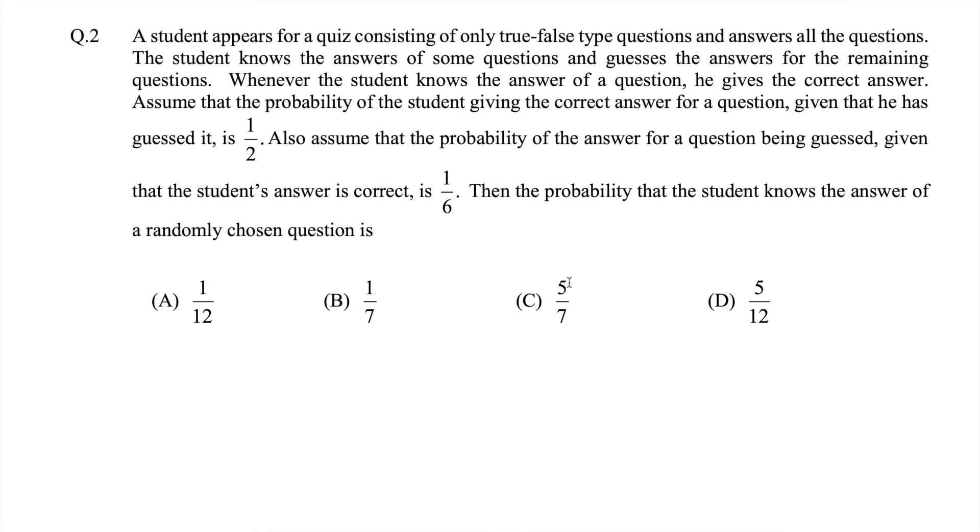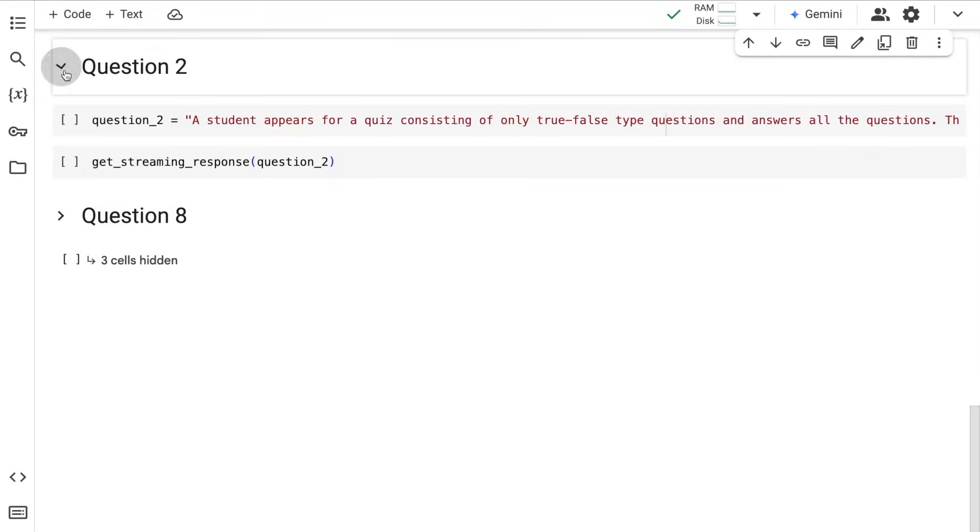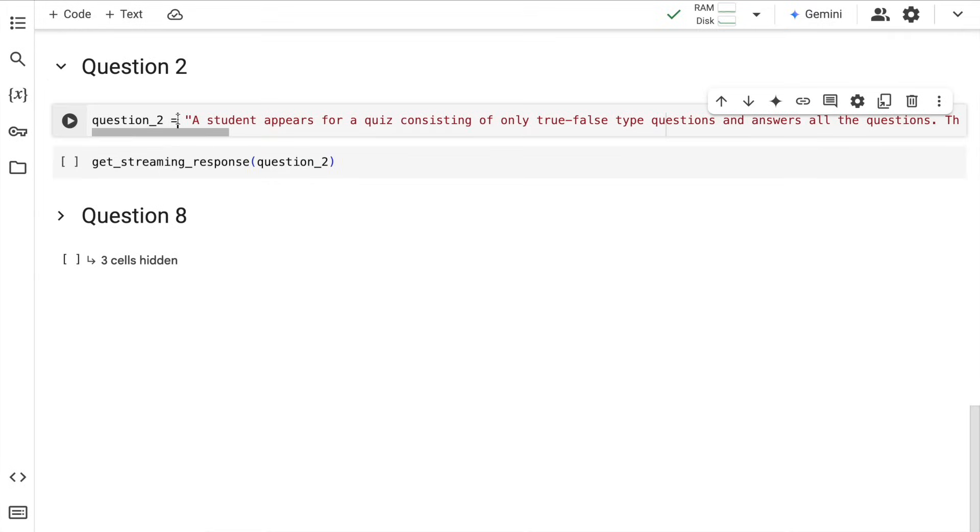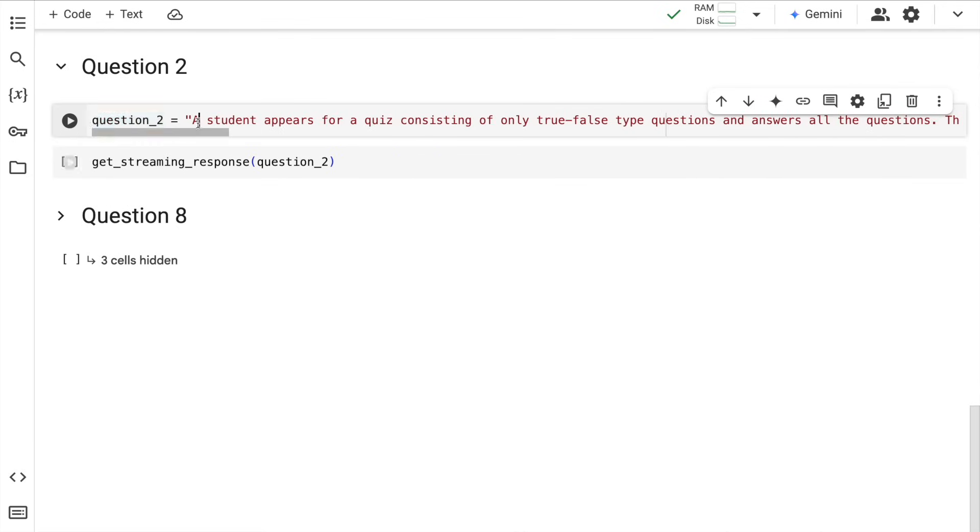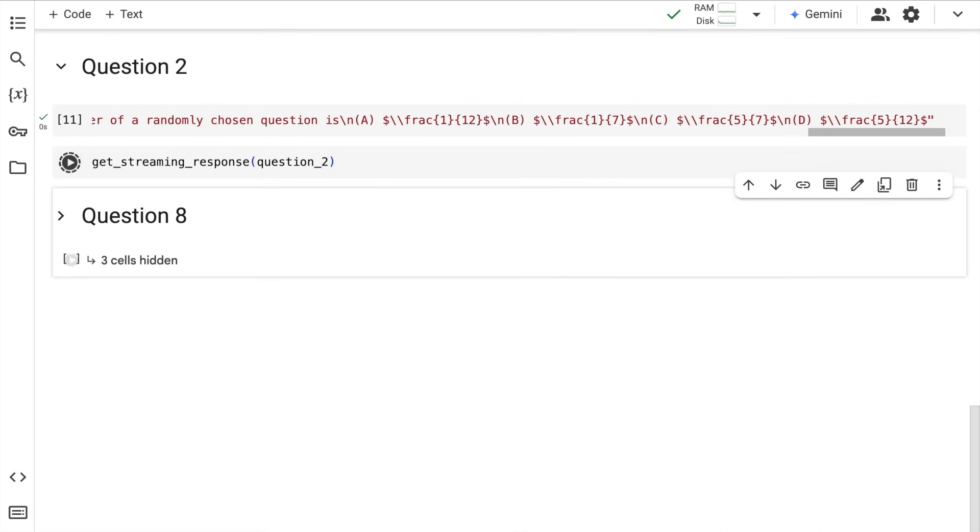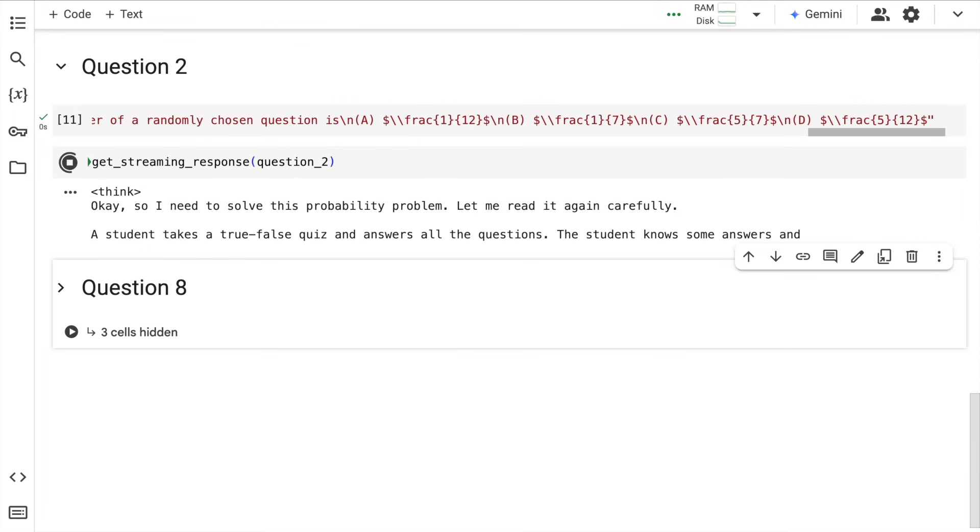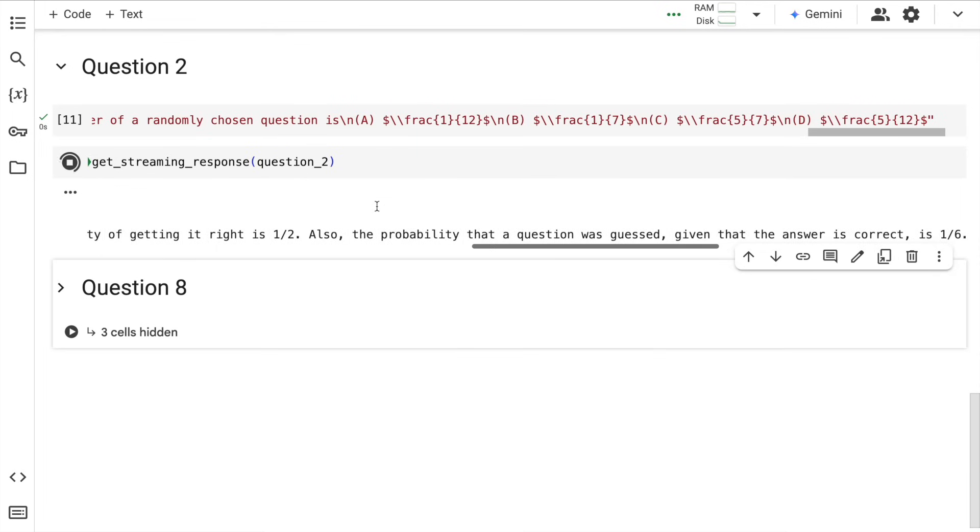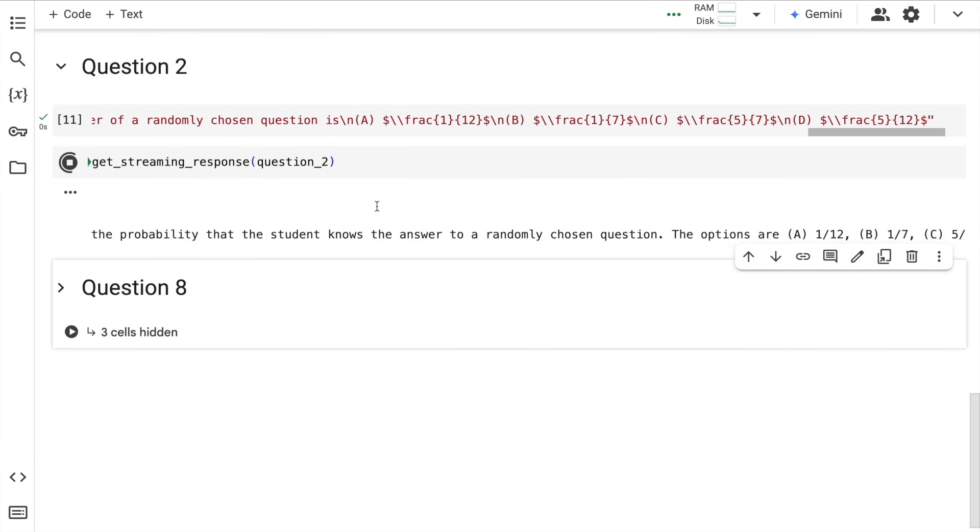Let's put this probability question to test using the DeepSeek R1 model. The process is still the same. I've taken the question, converted it into a LaTeX-compatible question, saved it into a variable called question_2, and now I call the function get_streaming_response. Here is where DeepSeek R1 model starts thinking and it tries to reason out and reach at the answer.